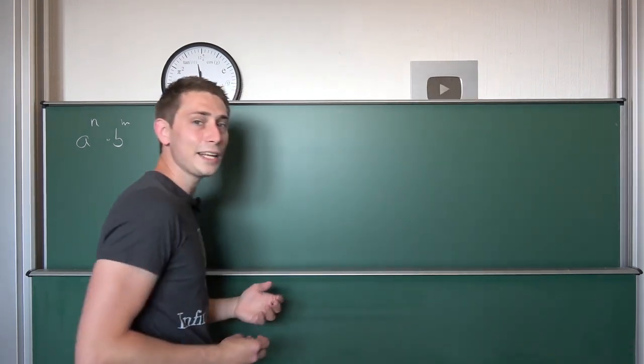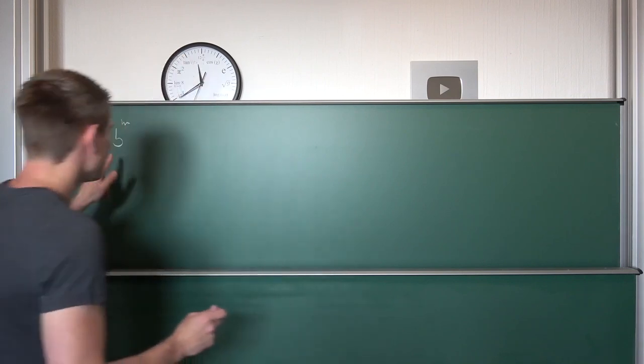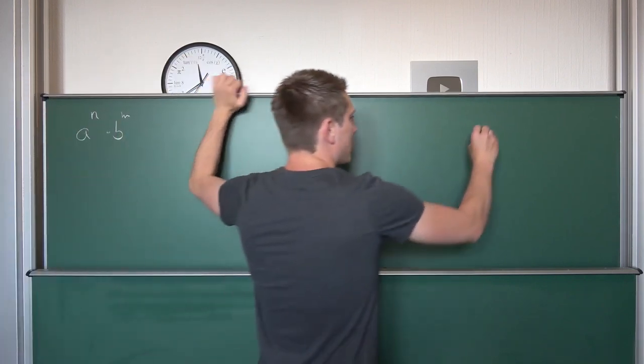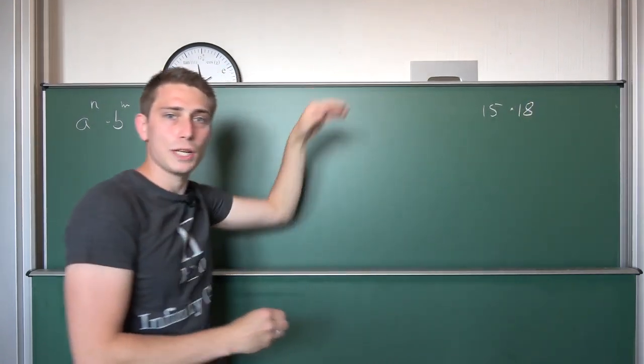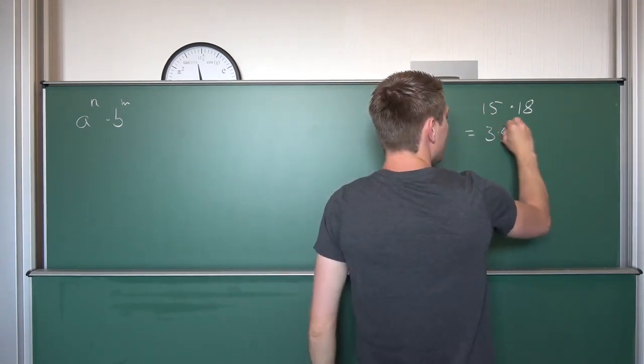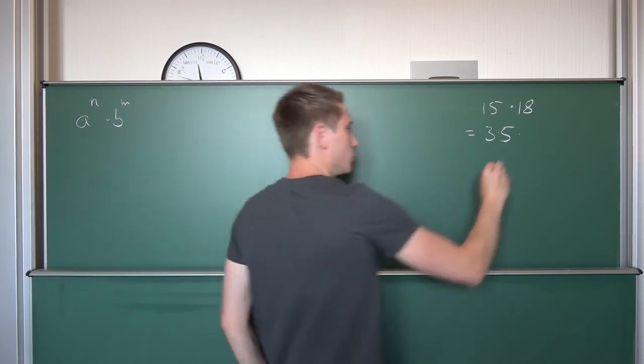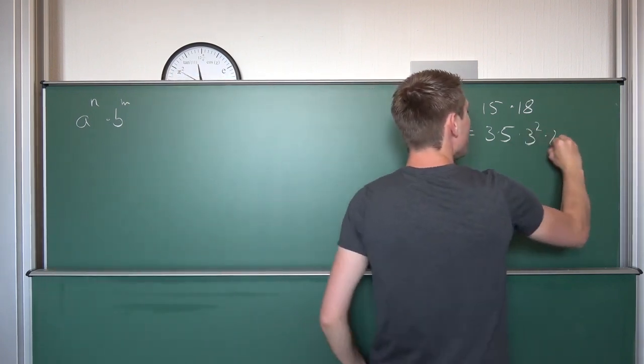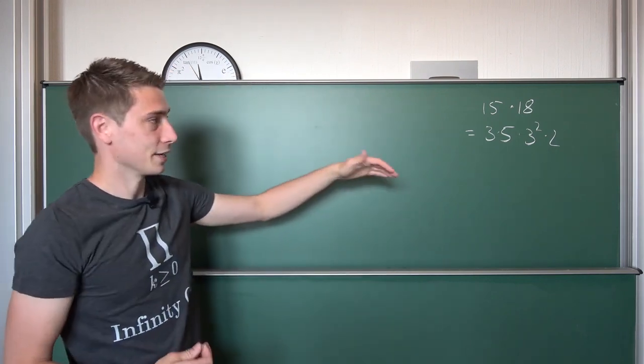Last time we were basically just dealing with some special cases where we talked about composite number bases in the way that we had, for example, 15 times 18. And we found out that we could express 15 as 3 times 5 and 18 as 3 squared, so 9 times 2, 3 squared times 2. And then we would collect common terms, use exponentiation rules.